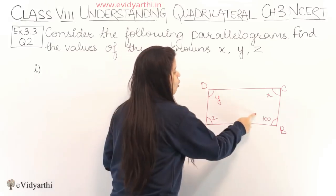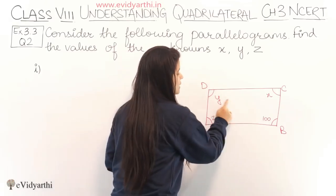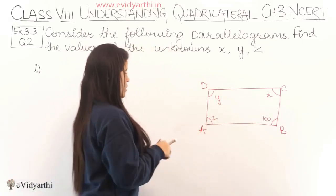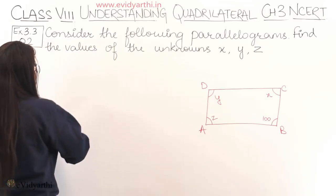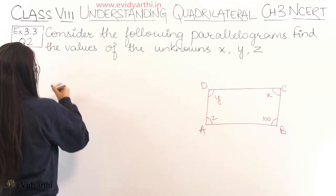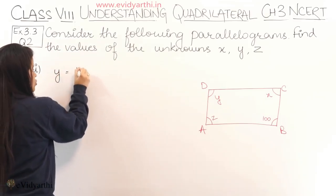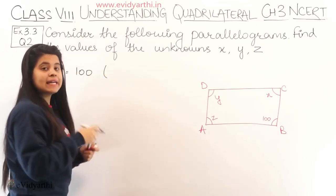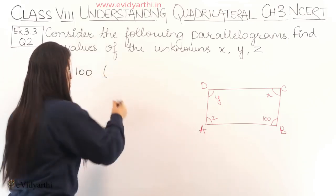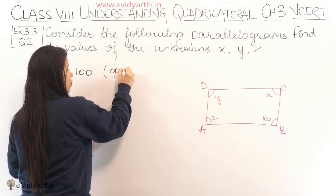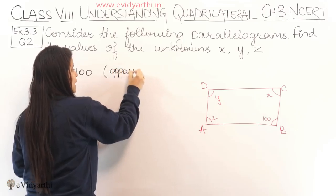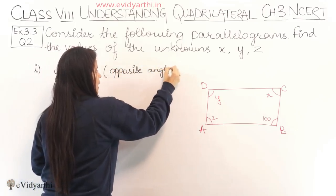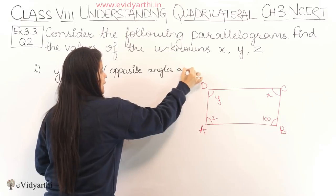So first, we know that opposite angles of a parallelogram are equal. It is very clear that y is equal to 100°. We write the reason in brackets: opposite angles are equal.